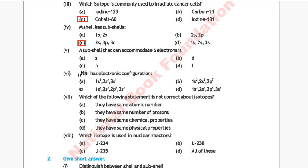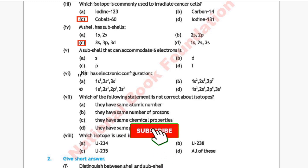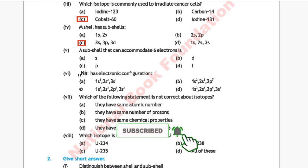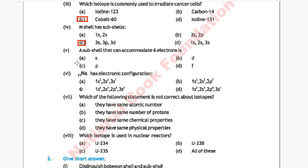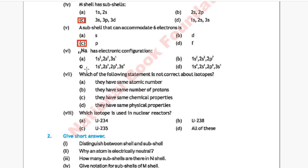Question 5: A subshell that can accommodate 6 electrons is called — Option A: s, Option B: d, Option C: p, Option D: f. The correct answer is Option C, which is p.